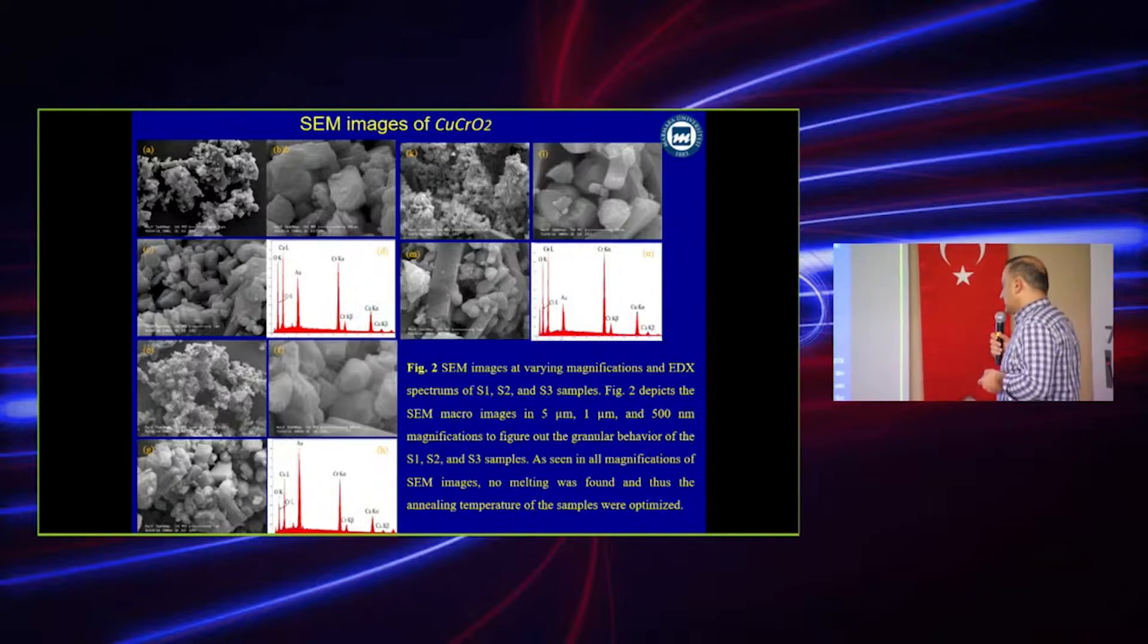In all magnifications, all the SEM images, no melting was observed, and thus the annealing temperature of the samples were optimized. If we increase the temperature, we get some melting, so we do not get the desired result in magnetic and optical properties.